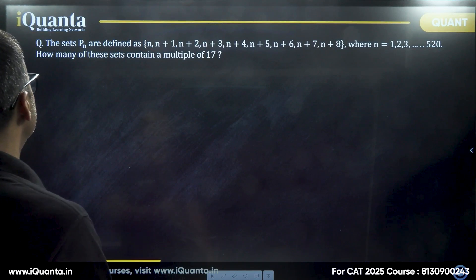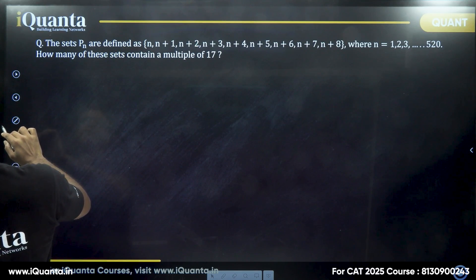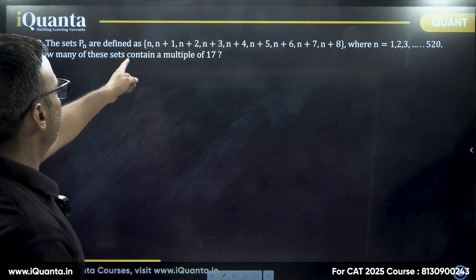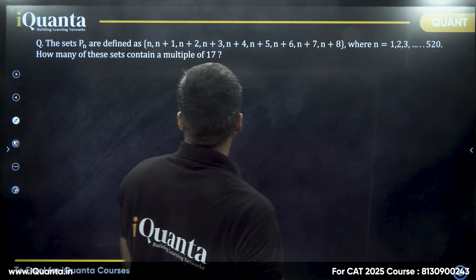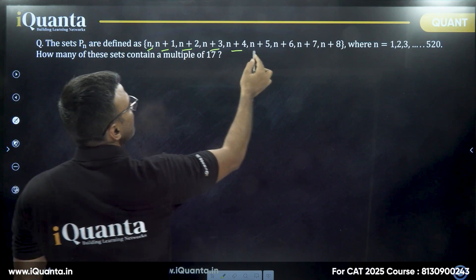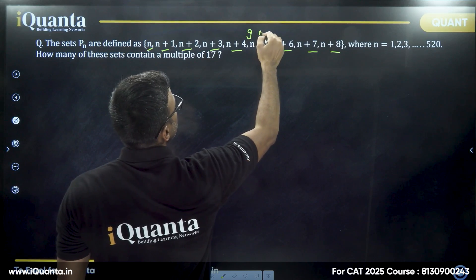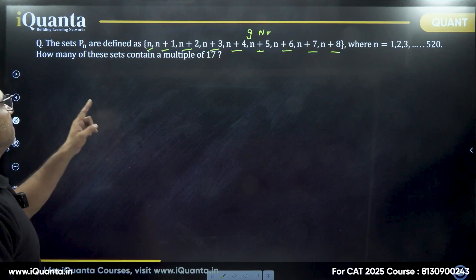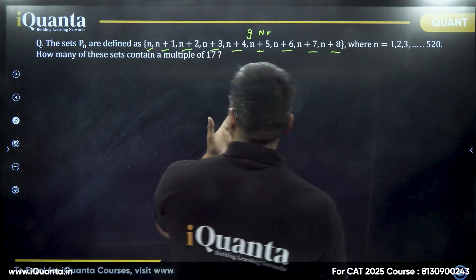This is a slightly tricky question — you have to be very careful. The sets Pn are defined as {n, n+1, n+2, n+3, n+4, n+5, ..., n+8}. Count carefully: 1, 2, 3, 4, 5, 6, 7, 8, 9 — there are 9 numbers in each set. Here n goes from 1, 2, 3 up to 520. The question is: how many of these sets contain a multiple of 17?